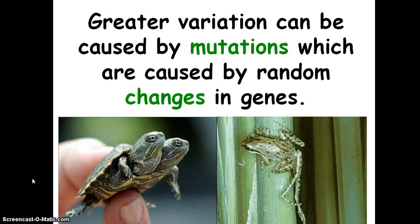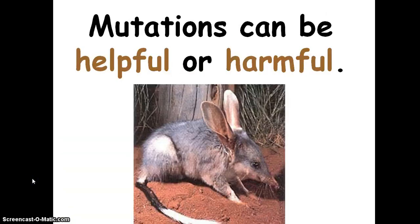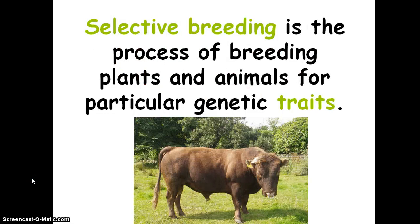Greater variation can be caused by mutations, which are caused by random changes in the genes. Mutations occur when a section of DNA called a gene has a change, and mutations can be helpful or harmful.